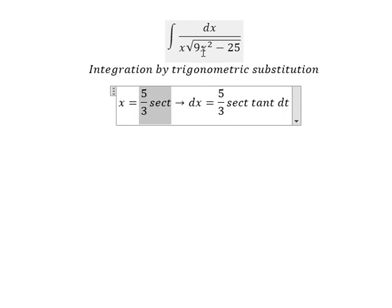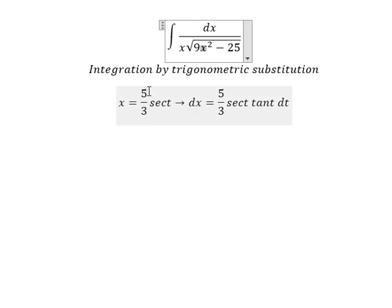Because if I put this one in here, we have 25 over 9 secant of t squared. The 9s cancel, and for the 25s we can do factorization. Secant of t squared minus 1 we change to tangent squared, and later we simplify the square root and dx.